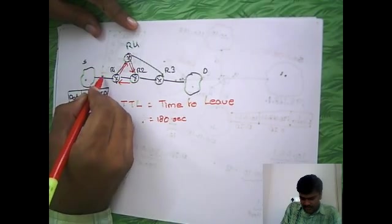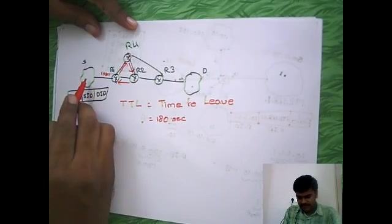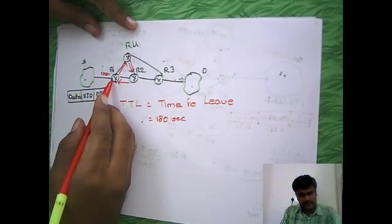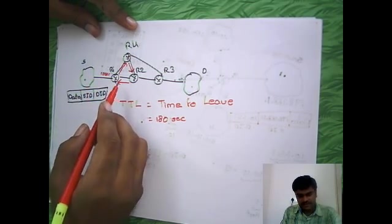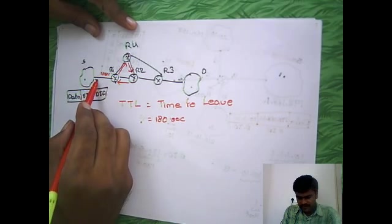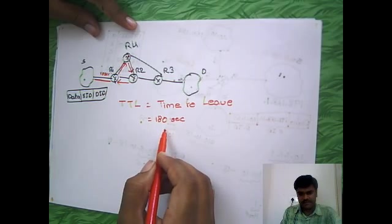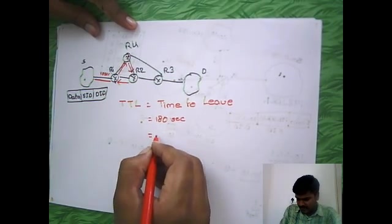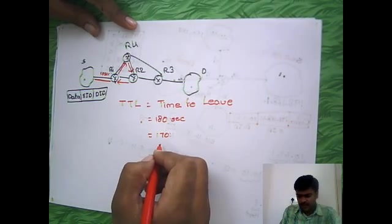Assume in between it is taking 10 seconds to reach here. Whenever this packet reaches R1, it will deduct by using timestamps. It will come to know how much time to travel between these two. Then that time will be reduced from this path, then it will set a new time as 170 seconds.